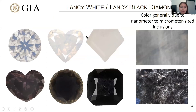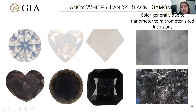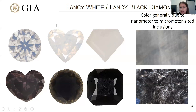Discussing fancy white and fancy black diamonds briefly: instead of differences in color saturation, we see differences in transparency — they can appear translucent through to opaque. These are different from the others we've looked at: rather than atomic-scale defects, their color is generally due to nanometer- to micrometer-sized inclusions. An interesting dichotomy: fancy whites have only been seen in nature at GIA — none have been seen that were treated or lab-grown. Conversely, there are many ways to create treated fancy black stones.